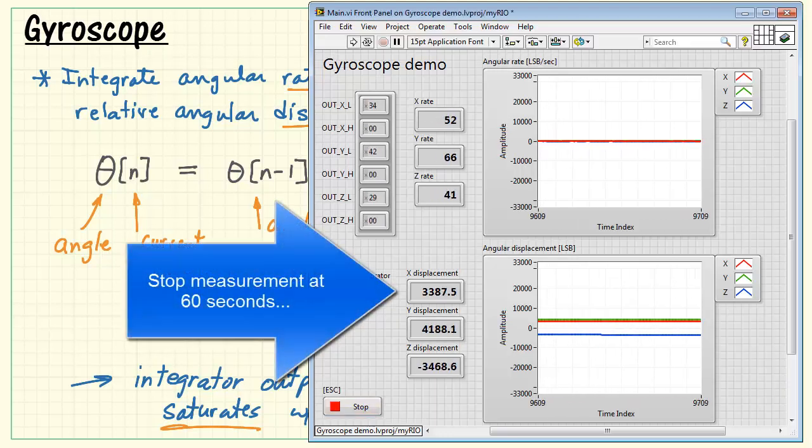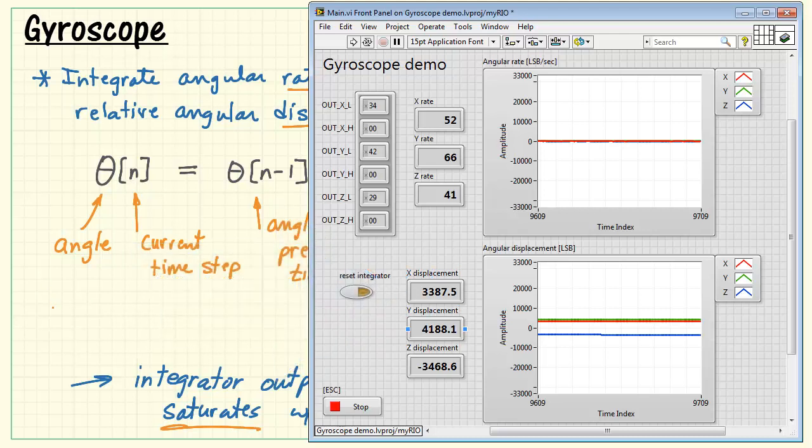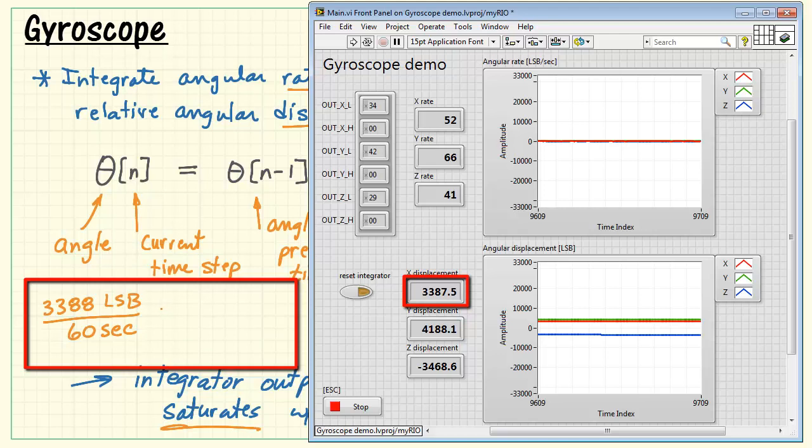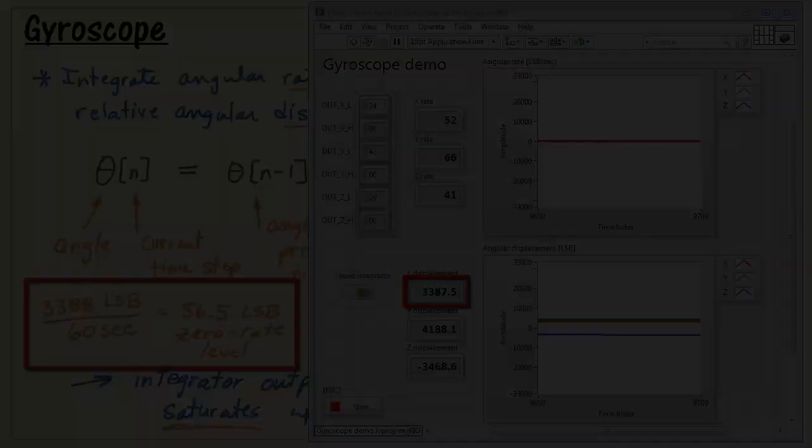And now 60 seconds after reset, I'm stopping the measurement. Note how the x-displacement, as an example, has become 3,388 least significant bits over this time span of 60 seconds. Divide that number by 60 and we get our zero rate level of 56.5 least significant bits.